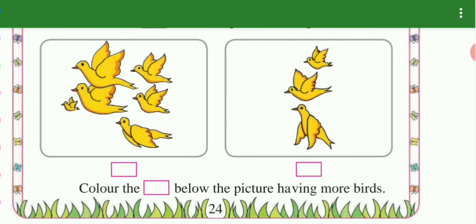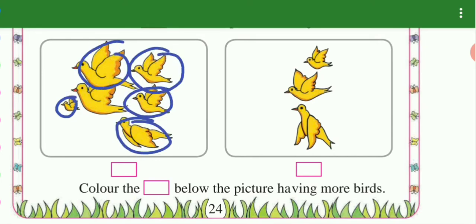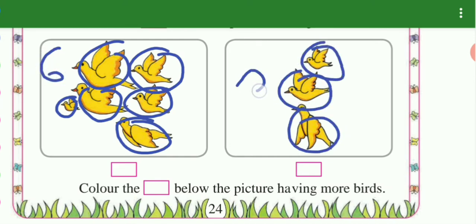Color the box below the picture having more birds. Count: 1, 2, 3, 4, 5 and 6 — 6 birds. And here 1, 2 and 3 birds. Color the box below the picture having more birds.